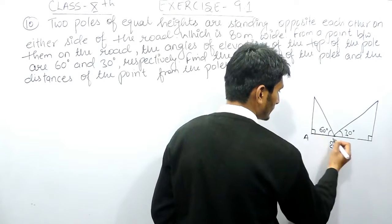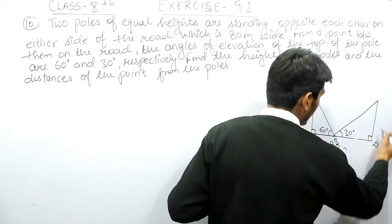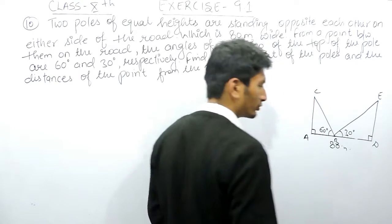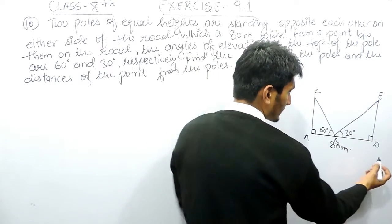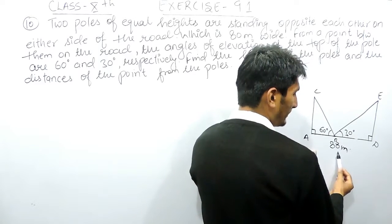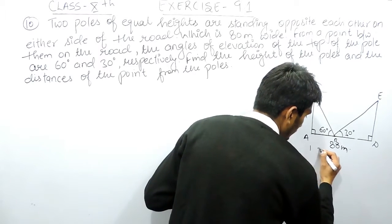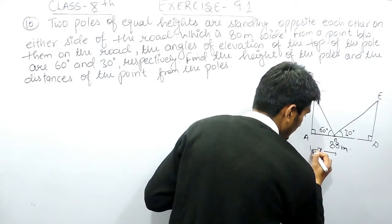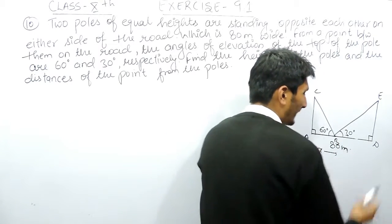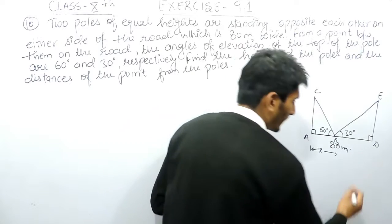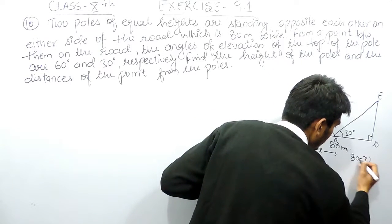If I name the points A, B, C, D, and E, these are the two triangles. The complete road is 80 meters. If I suppose this distance is X meters, then the remaining distance must be 80 minus X meters.